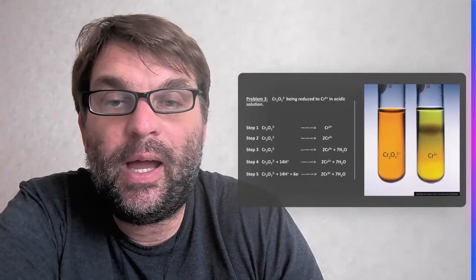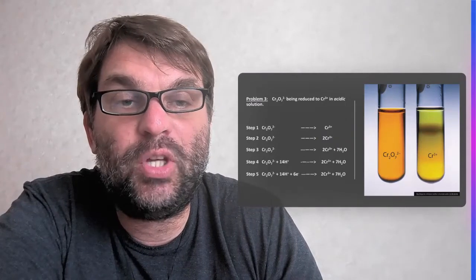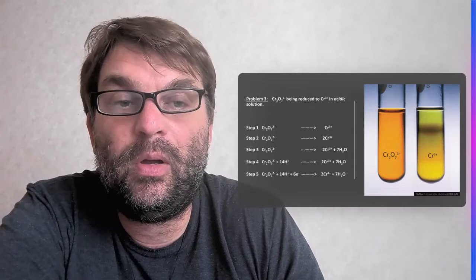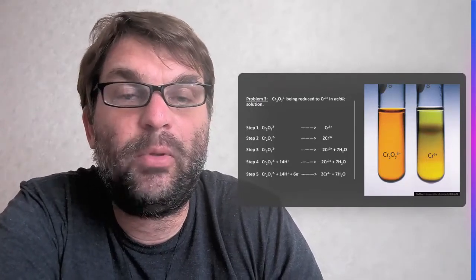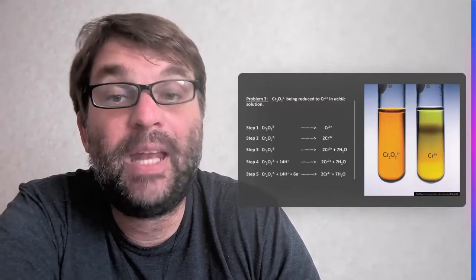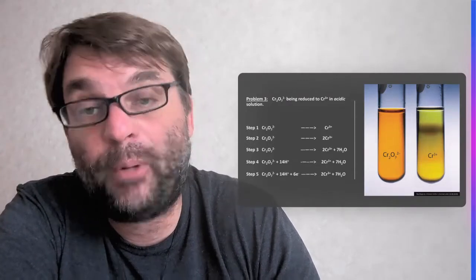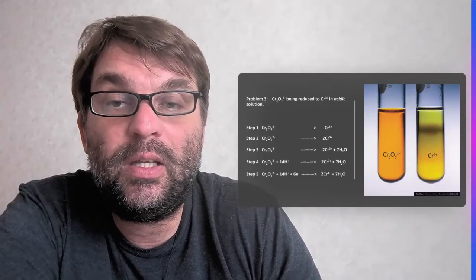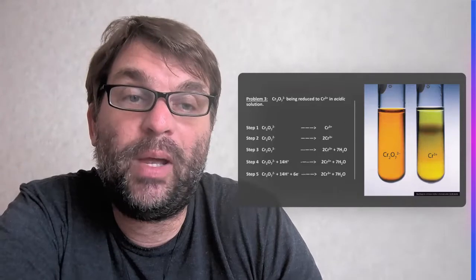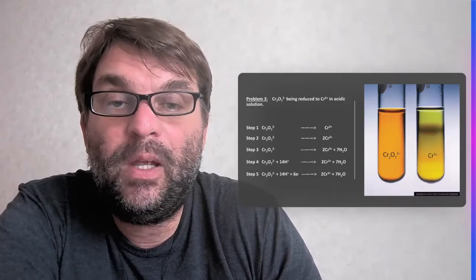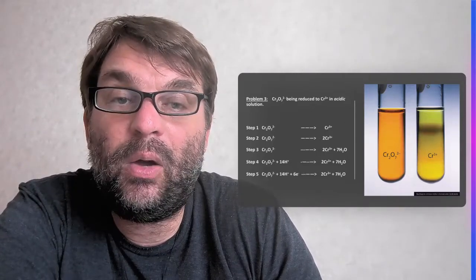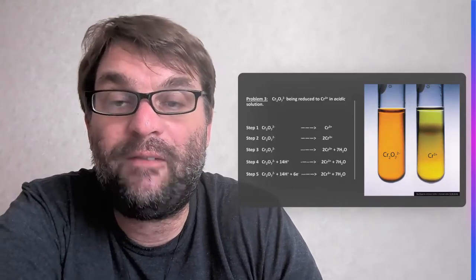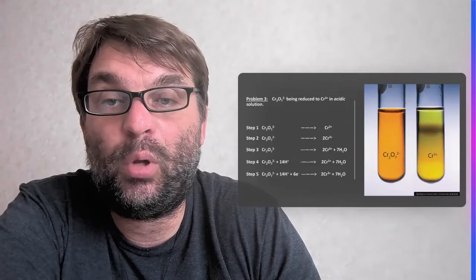And the final one, and you can see from this wonderful image here, is the change of the orange dichromate to the kind of yellowy chromium 3 plus cation. And again, it's in acidic conditions, so we have to consider protons. So the first one is the half equation with just species, what's happening. So as I've mentioned, the dichromate's going to the chromium 3 plus. Step two, we have to have 2 Cr^3+, because you've got two on the left-hand side in the actual polyatomic anion.